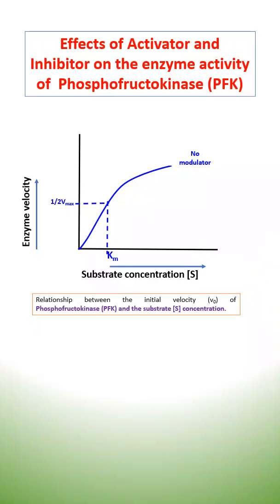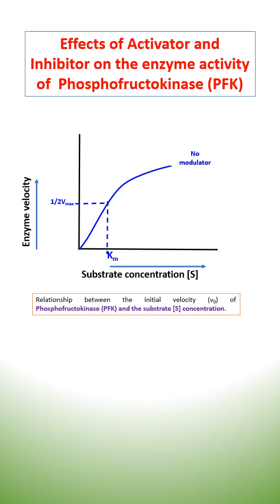This is the graph of initial velocity of phosphofructokinase against substrate concentration. Let's see the effects of activator and inhibitor on the enzyme activity of phosphofructokinase.